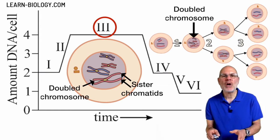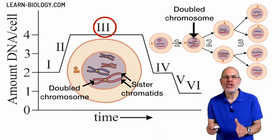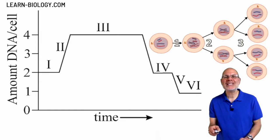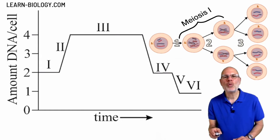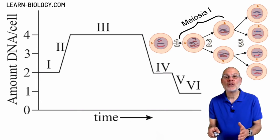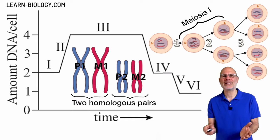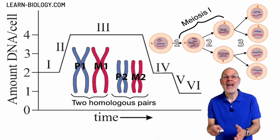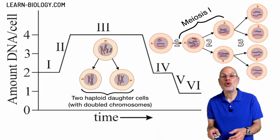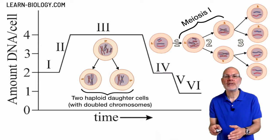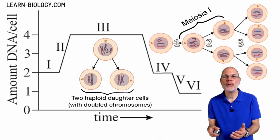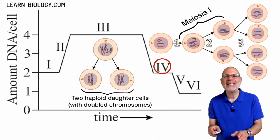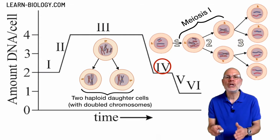Those X-shaped structures in the second cell on the right are doubled chromosomes consisting of two sister chromatids. Meiosis consists of two cell divisions. During meiosis I, the cell divides and homologous pairs of chromosomes are pulled apart. Homologous pairs are the matching chromosomes inherited from the mother and the father. That first cell division creates two haploid daughter cells, but each daughter cell has doubled chromosomes consisting of those two sister chromatids. The amount of DNA in each daughter cell is indicated by Roman numeral IV.